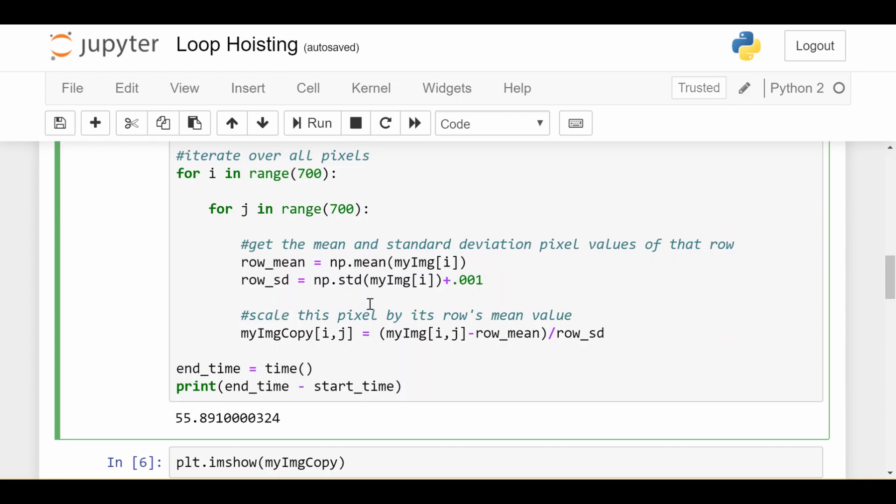Why do I add this point 001? The reason is because if the standard deviation is zero, when I try to divide by it, I'm going to have a bad time. So we just give it a little bit of extra boost. And then we scale this pixel by its row's mean value. So we say that in the copy of our image, that new pixel at ij is going to be the original pixel at ij minus the row mean divided by the standard deviation of the row. So you can think of this as a z-score kind of thing in your stats class or just a normalization type thing, however you want to think about it. So we do that for all of the pixels. We measure how long it took. And this run took about 56 seconds to get its work done.